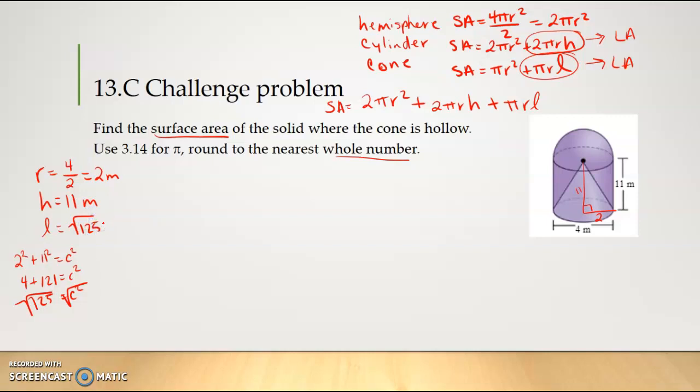From here I'm just gonna plug - I'm going to find each individual and then combine them at the end. I'm going to start with that hemisphere because in my opinion it's the easiest one. For the hemisphere we're doing 2π times our radius, so 2 times 2² = 2 times 4 times π = 8π, and 8π is approximately 25.12.